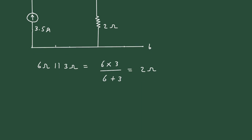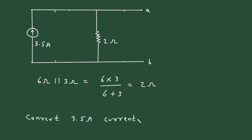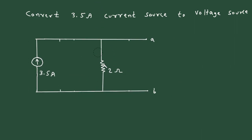Now we can convert this 3.5 ampere current source into its equivalent voltage source. Convert 3.5 ampere current source to voltage source. When we convert this current source to its equivalent voltage source, it will be in series with the 2 ohm resistor. There will be a voltage source with polarity positive upward because the direction of this current source is upward.